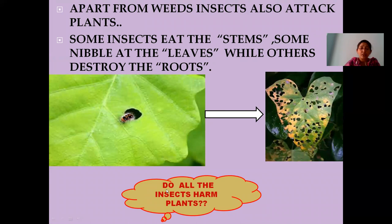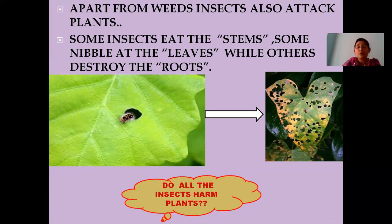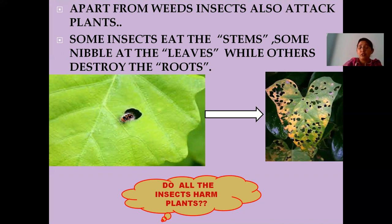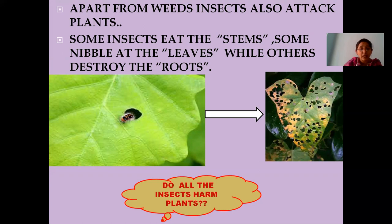Do all the insects harm plants? No, all the insects are not harmful. The best example is the honeybees — honeybees are the most important insects which bring out pollination. When pollination occurs, then only the seeds are formed, which is the food to all organisms on the earth. So all the insects are not harmful; a few of the insects are helpful also.